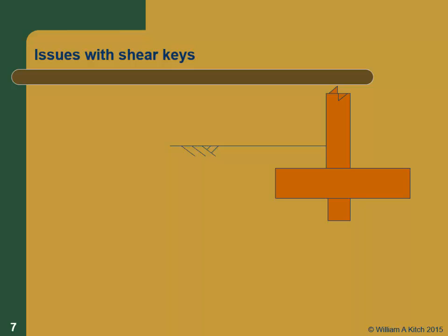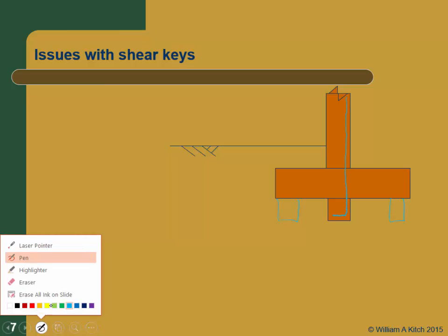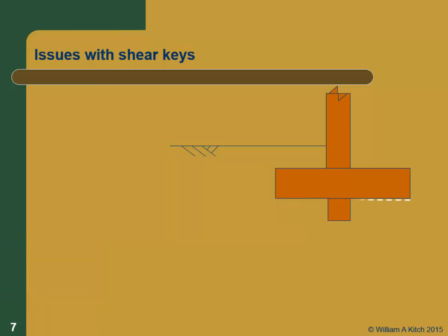When we put keys in, they generally end up right under the stem for structural design reasons — the key requires reinforcement to prevent shear failure, and it's easy to hook the stem reinforcement directly into it. But it's not clear that's the most effective place. Some argue the best place is at the back of the footing, and it might actually not be a bad idea to put them toward the front. We'll discuss why in a moment.